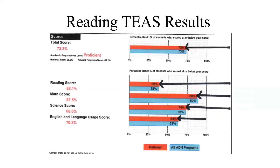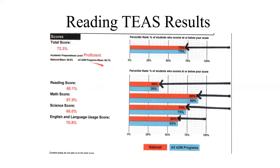Once you get your test results back, your total score and your scores for each individual section are shown. Your results are based on how you compare to peers who took the test at the same time — in other words, how well you did compared to everybody else. Your goal, at minimum, is to be above 45 percent, but you also want to do really well compared to everybody else. Even though test results can be confusing, your goal is simply to get your total score as high as you can.